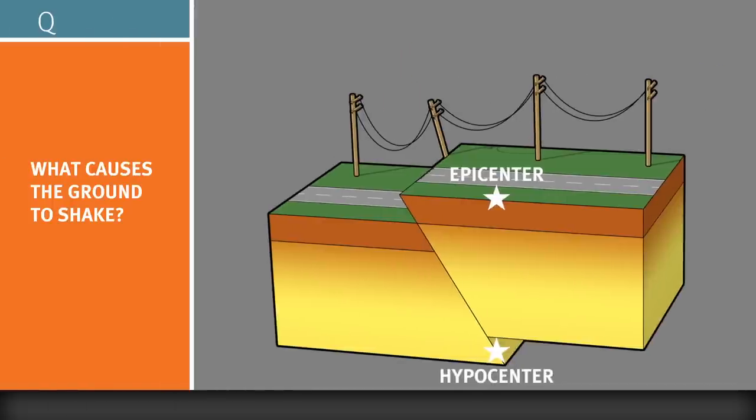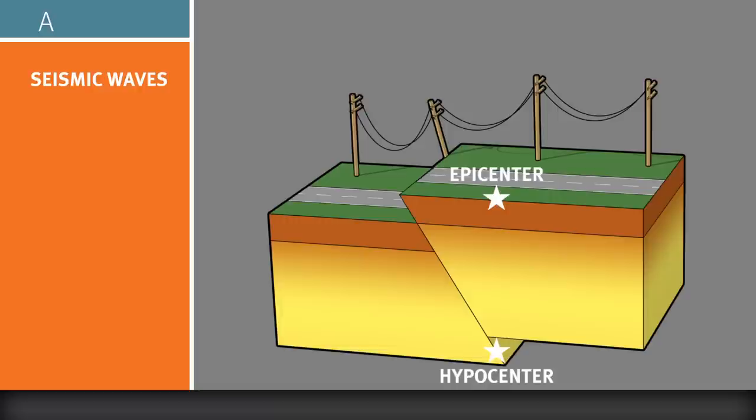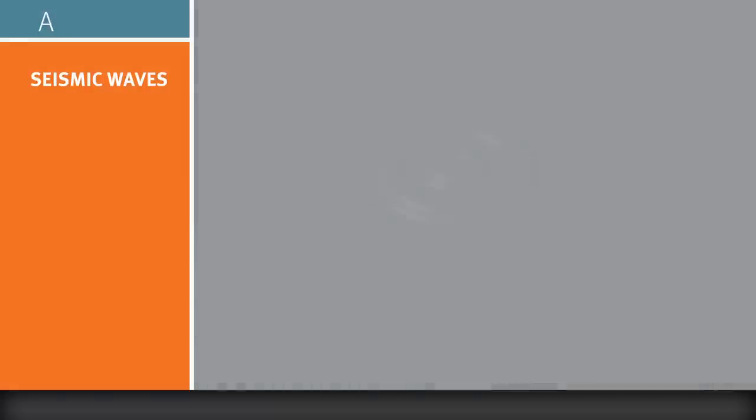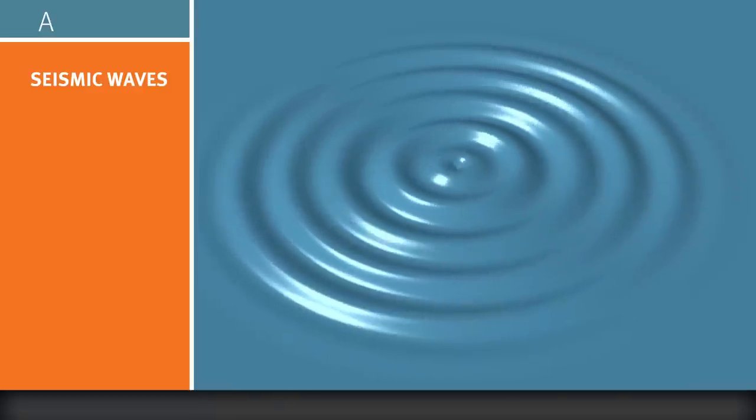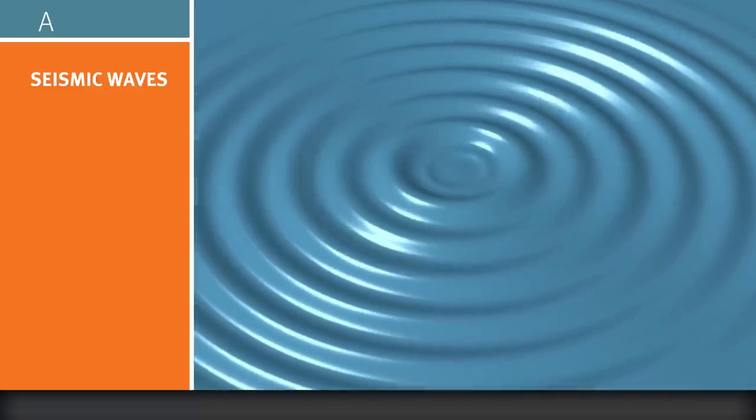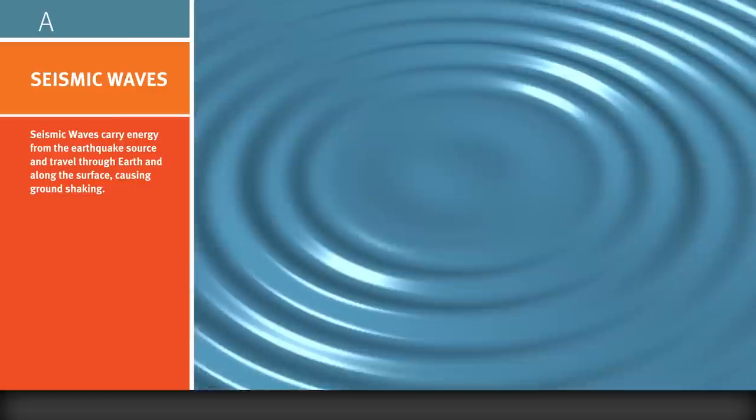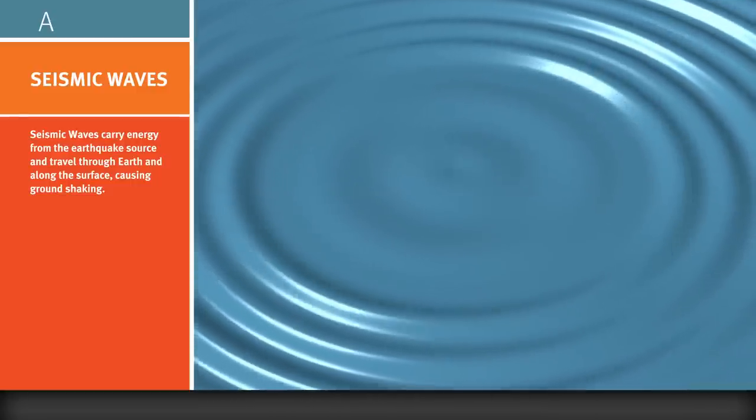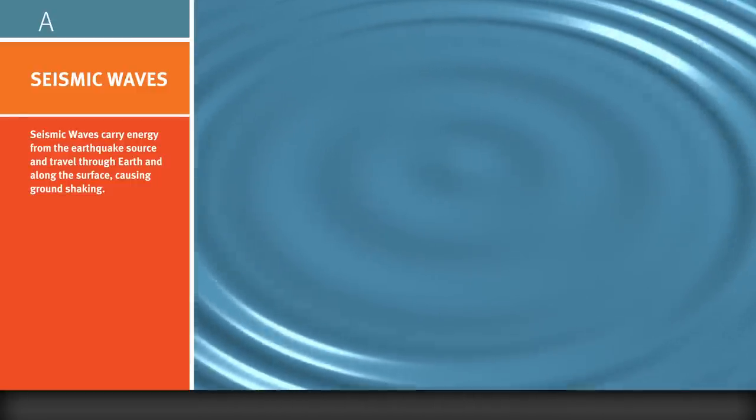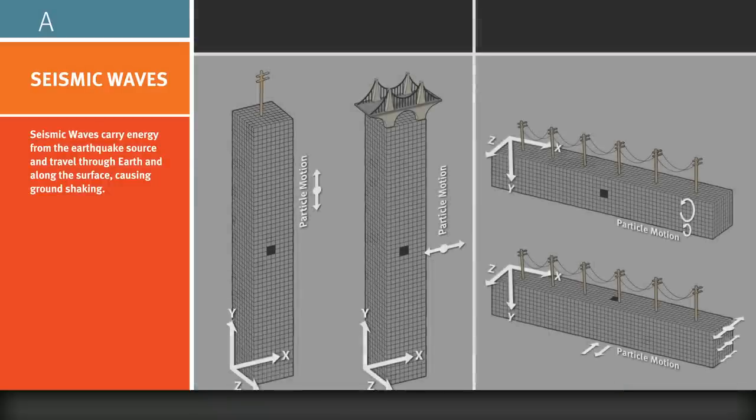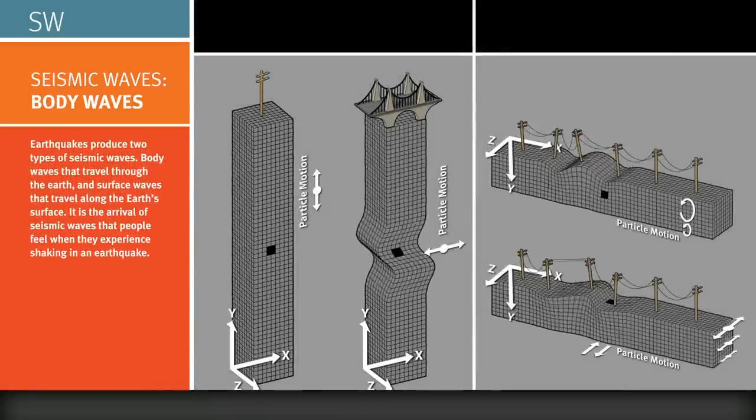To grasp what causes the ground to shake, we need to understand the propagation of seismic waves. Just as throwing a rock into a pond causes radiating ripples, rupturing of a fault in an earthquake causes a transmission of energy in the form of seismic waves traveling away from the hypocenter and epicenter. Earthquakes produce many types of seismic waves.